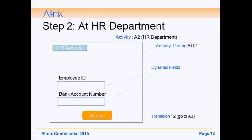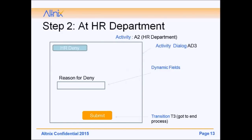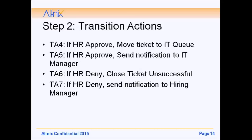The second activity is at the HR department. HR can either approve or deny. If HR approves, you enter the employee ID and bank account number and hit submit — this is Transition T2, moving to the next activity A3. If HR denies, you enter the reason for denial and hit submit — this is Transition T3, going to an unsuccessful end. Transition actions include TA4 (move ticket to IT queue on HR approve), TA5 (send notification to IT manager on HR approve), TA6 (close ticket unsuccessful on HR deny), and TA7 (send notification to hiring manager on HR deny).